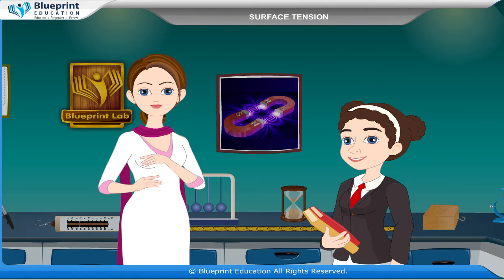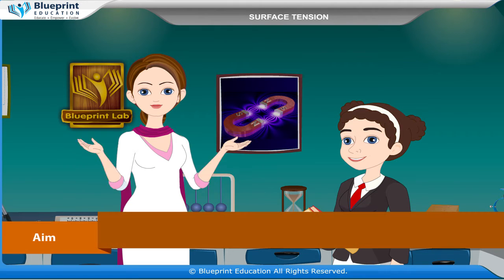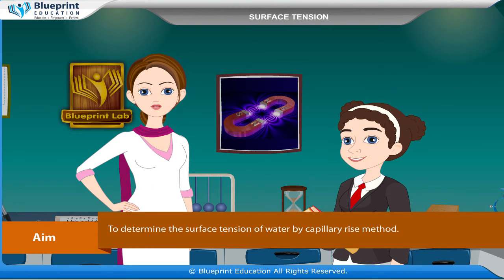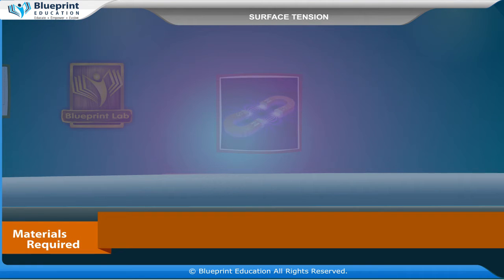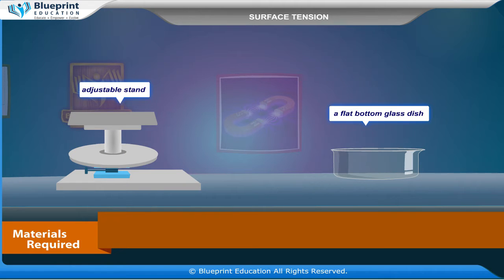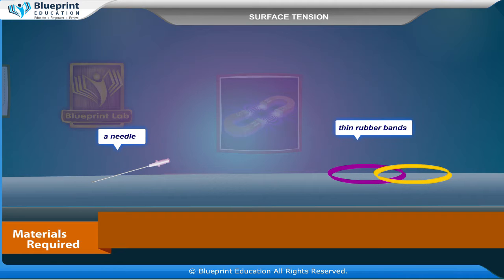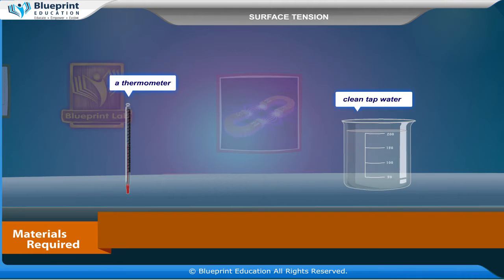Let's do an experiment to determine the surface tension of water by capillary rise method. The materials required are: 3 glass capillary tubes of different diameters, a travelling microscope, an adjustable stand, a flat bottom glass dish, a clamp stand, a glass strip, a needle, thin rubber bands, a thermometer, and clean tap water whose surface tension is to be determined.